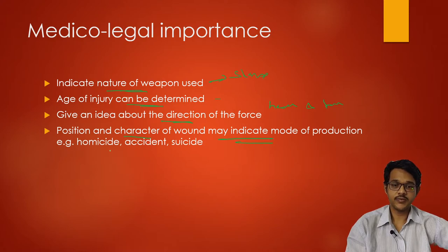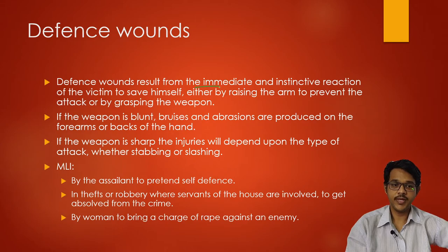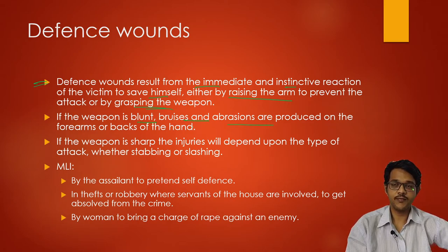The position and character of the wound may indicate the mode of production — whether it was homicide, accident, or suicidal. Homicide wounds may be present in any part of the body, commonly head, neck, and trunk. Defense wounds are found on the inner forearms and hands of the victim, resulting from the instinctive reaction of the victim to save himself by raising the arm or grasping the weapon. If the weapon is blunt, bruises or abrasions are produced; if sharp, stab or slashing wounds may be present on the hands.